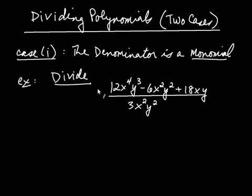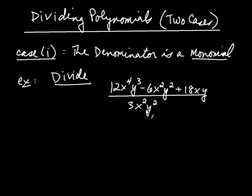Here we're going to divide polynomials, and we're going to break this up into two cases. Case one is when the denominator is a monomial. This is an example of case one — I can see the denominator here is a monomial. A monomial is simply a polynomial with only one term.